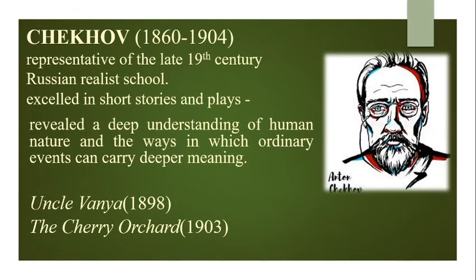The next important writer is Anton Chekhov, 1860–1904. Chekhov was a representative of the late 19th century Russian realist school. He excelled in writing short stories and plays that revealed a profound understanding of human nature and the ways in which ordinary events can carry deeper meaning. Chekhov's famous works are Uncle Vanya in 1898, considered a masterpiece, The Cherry Orchard in 1903, and his short stories are also very famous.